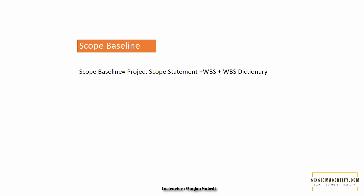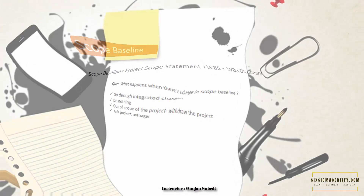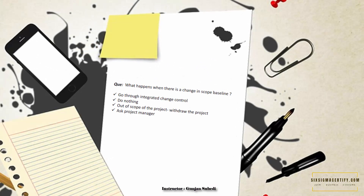For now, just understand that if the scope is changed or any new scope is introduced in the scope baseline, it has to go through and be approved by the integrated change control process. So we have a question: what happens when there is a change in a scope baseline or addition of any new scope in the project?